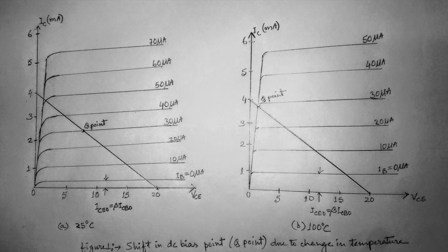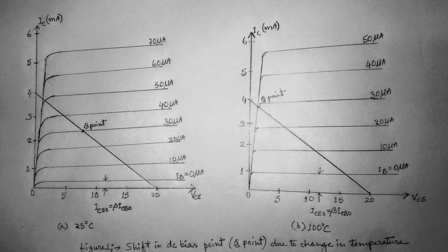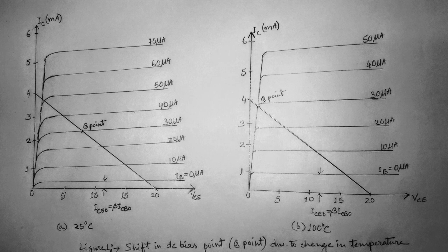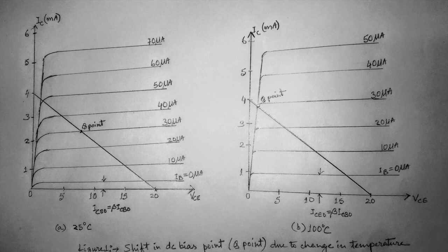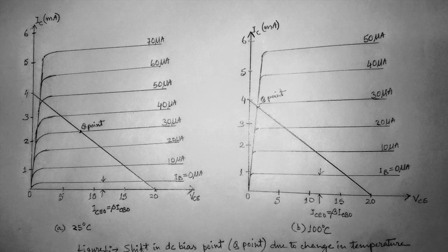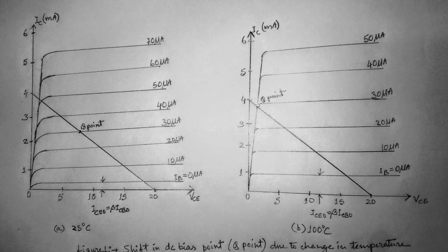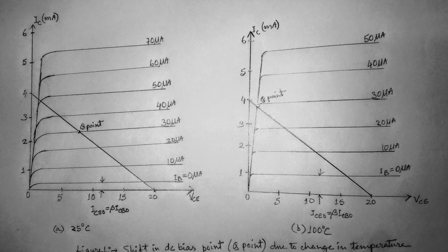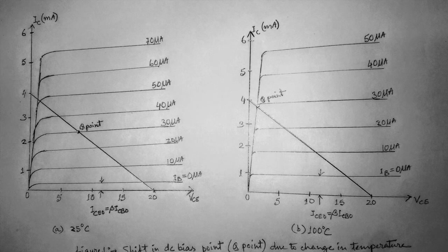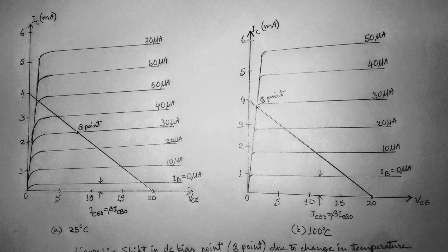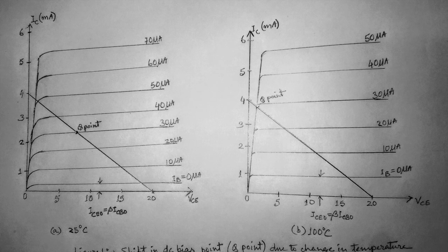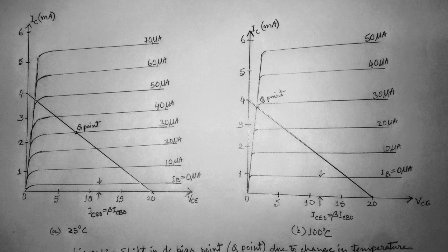Since the fixed bias circuit provides a base current whose value depends approximately on the supply voltage and base resistor, neither of which is affected by temperature or the change in leakage current or beta, the same base current magnitude will exist at high temperature, as indicated on the graph of subfigure B.